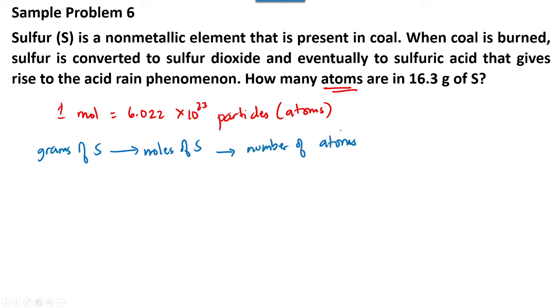Okay, so let's calculate. So 16.3 grams of sulfur times the molar mass of sulfur.